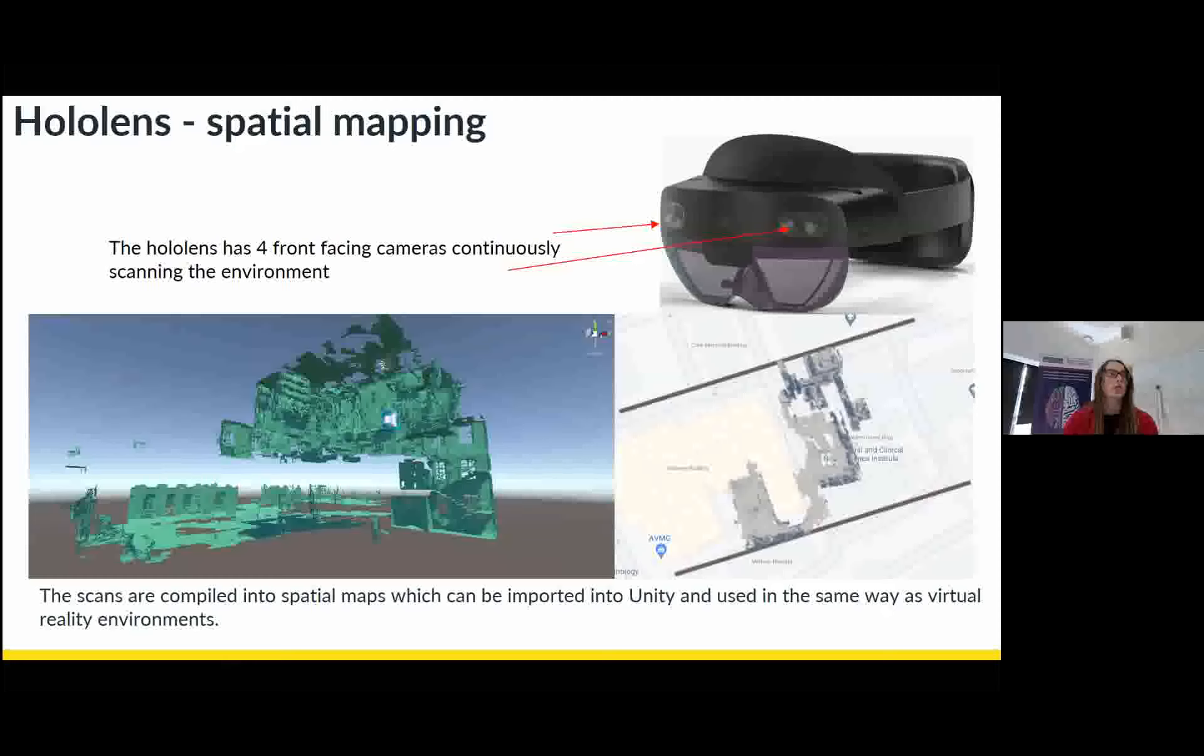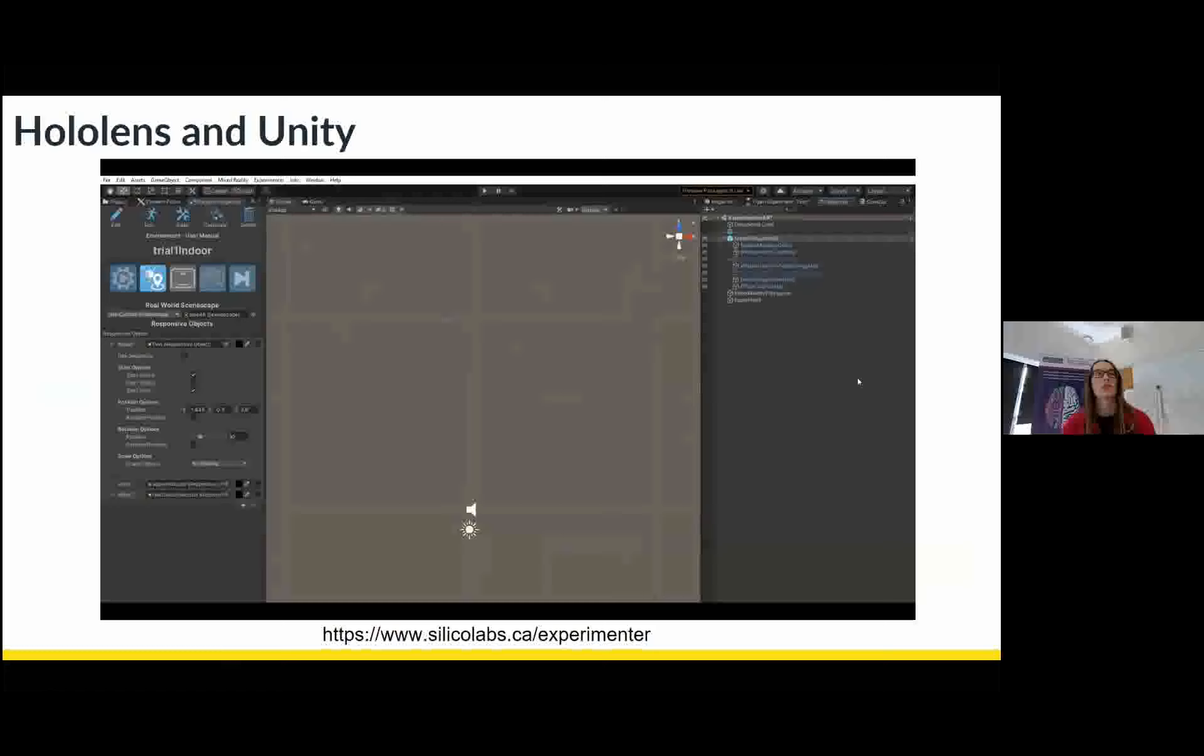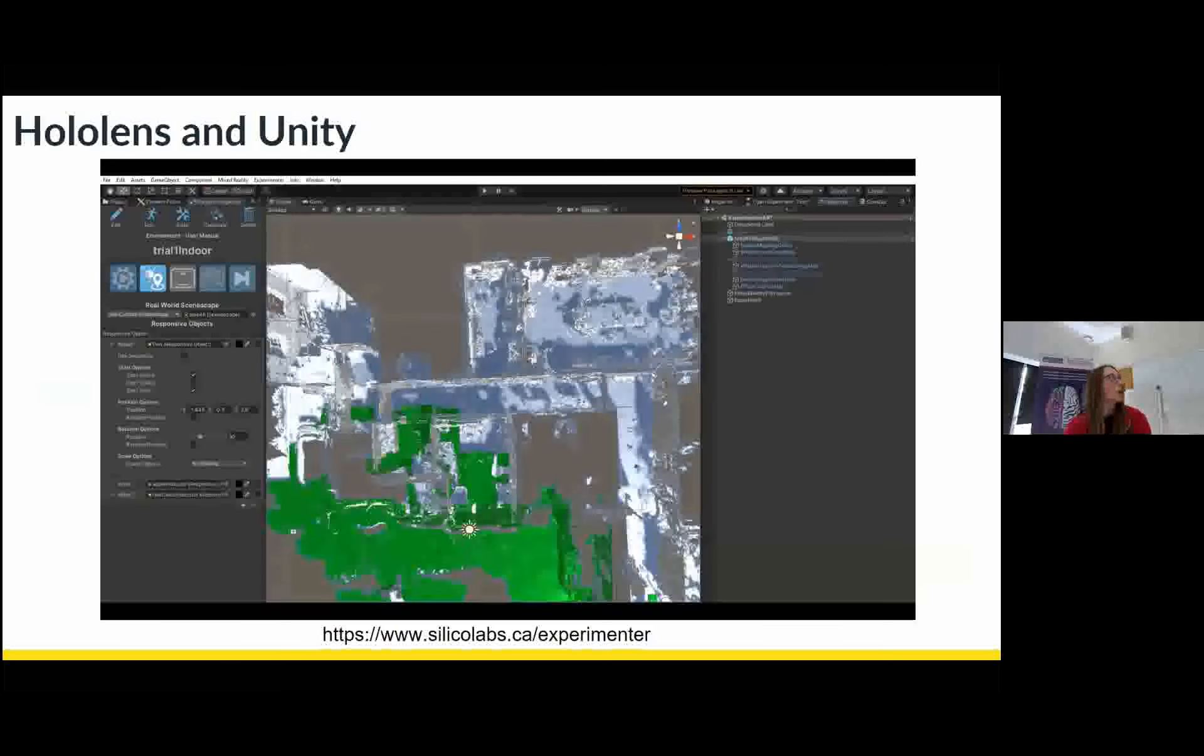So to be able to use the map to place objects into the real world, what I do is I import the map into 3D modeling software such as Unity or Unreal. Here's an example of me doing that in Unity. So this is the same map as you saw on the previous slide, but from the top down view. And this is the same room that you saw in that first video with the chameleon. And this is the table the chameleon was cycling along.